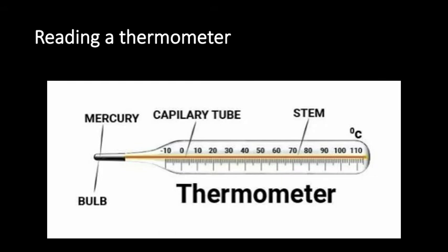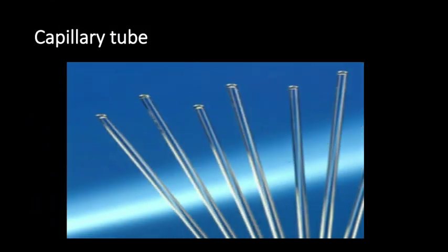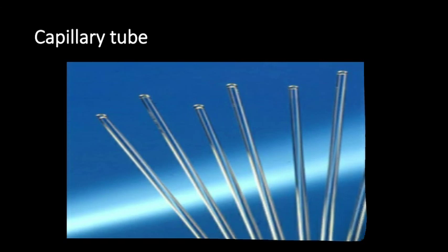Following are the steps needed to read a thermometer. First, shake the thermometer vigorously so that the mercury goes below the normal mark. Then keep the thermometer either in the armpit or under the tongue and wait for two minutes. After two minutes, take out the thermometer and read the mark where the silver column of mercury ends — that gives the temperature reading.